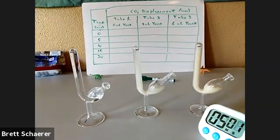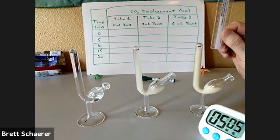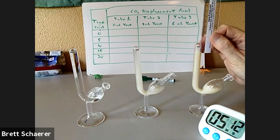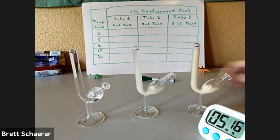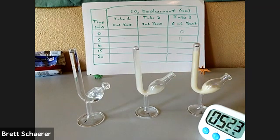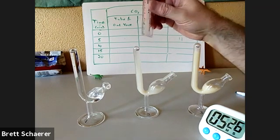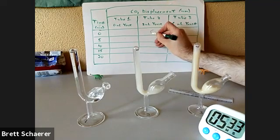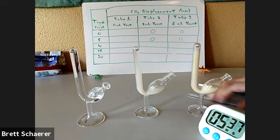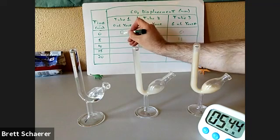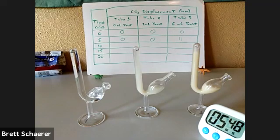Okay, so we are at five minutes now, so it's time to take our first reading. I'm going to start with tube three, since that one is going pretty quickly. I'm going to say 11 millimeters. So we have zero at time zero and now 11. And then in tube two we have nothing — zero and still zero. And tube one has also not moved, zero and zero. So we'll let this go for another five minutes and then record some more data.